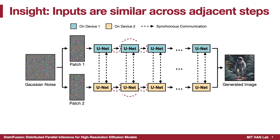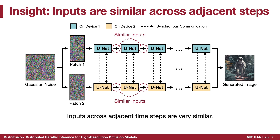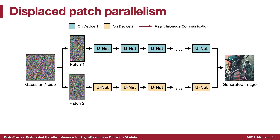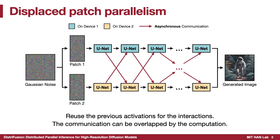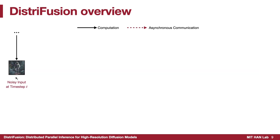In fact, inputs across adjacent time steps are very similar. Motivated by this, we propose displaced patch parallelism, which reuses pre-computed activations from the previous step to provide global context and patch interactions for the current step. In this way, the communication can be overlapped by the computation, and the overhead can be hidden. We further implement such a system with asynchronous communication, called DistriFusion.